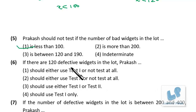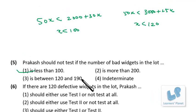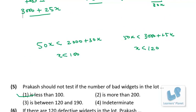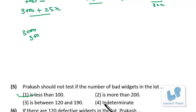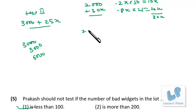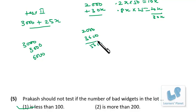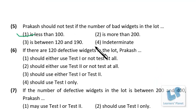Question 2: if there are 120 defective widgets, which test should Prakash use? Test 1 cost = 2000 + 30 × 120 = 5600. Test 2 cost = 3000 + 25 × 120 = 6000. The penalty for no testing = 120 × 50 = 6000. So Test 1 is the cheapest option — Prakash should use Test 1 only.